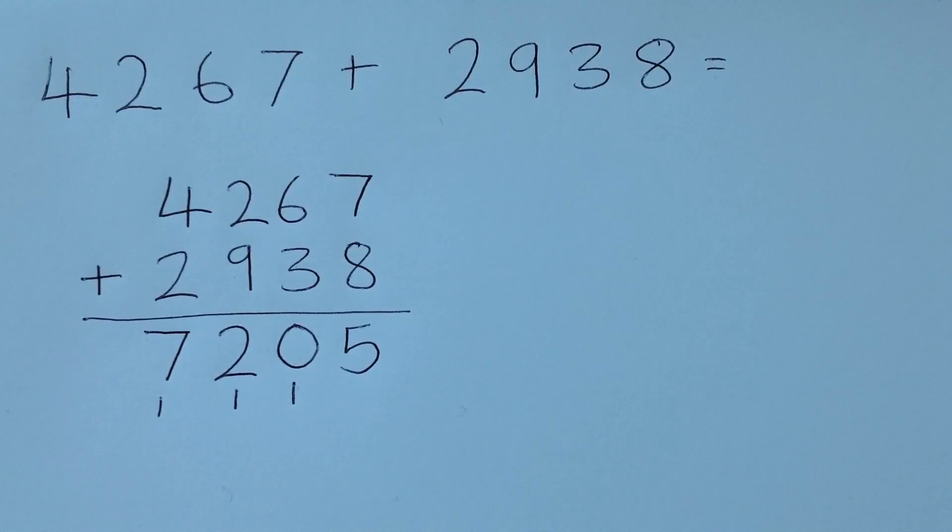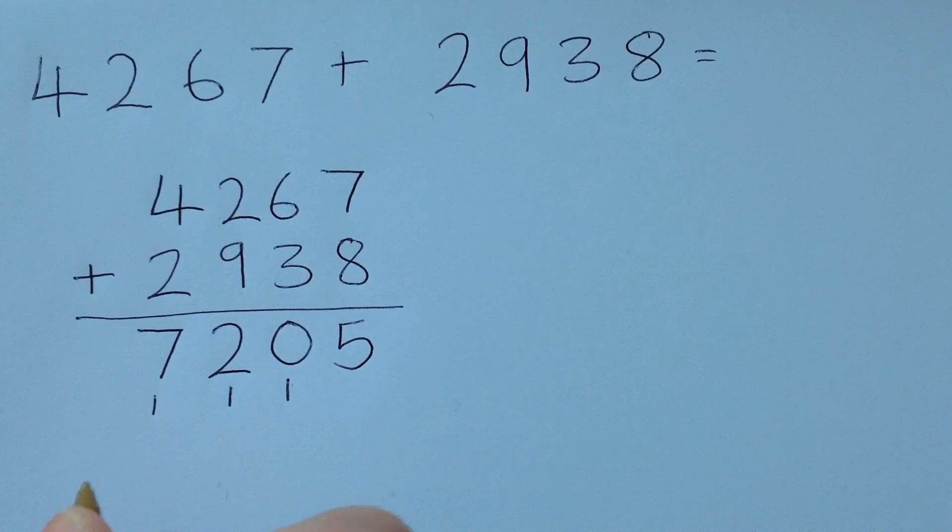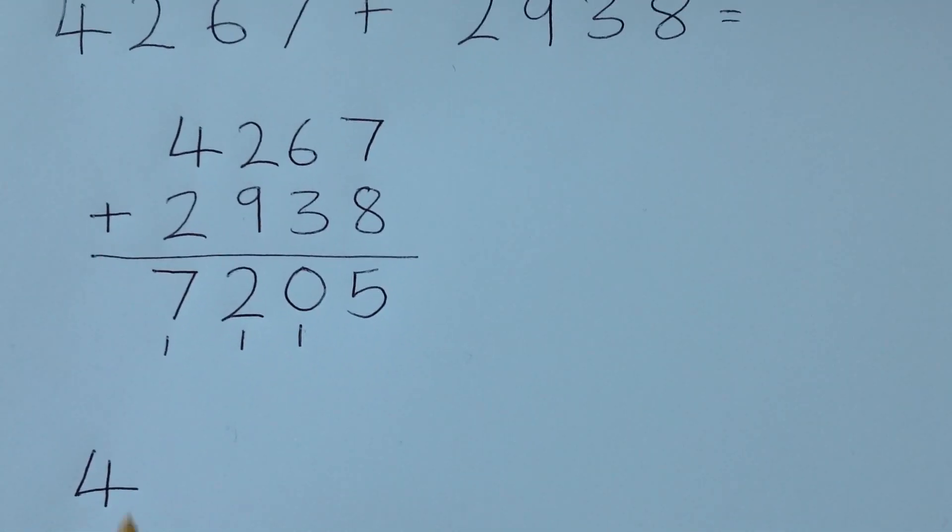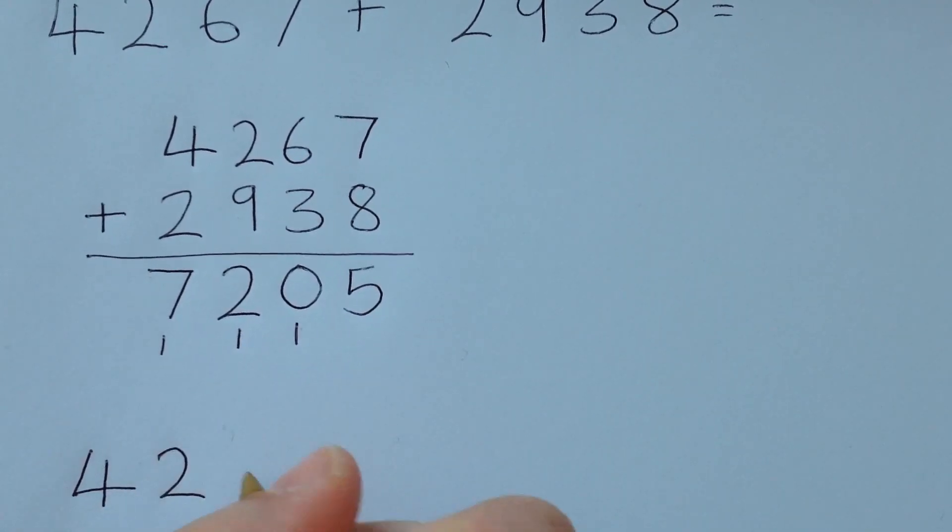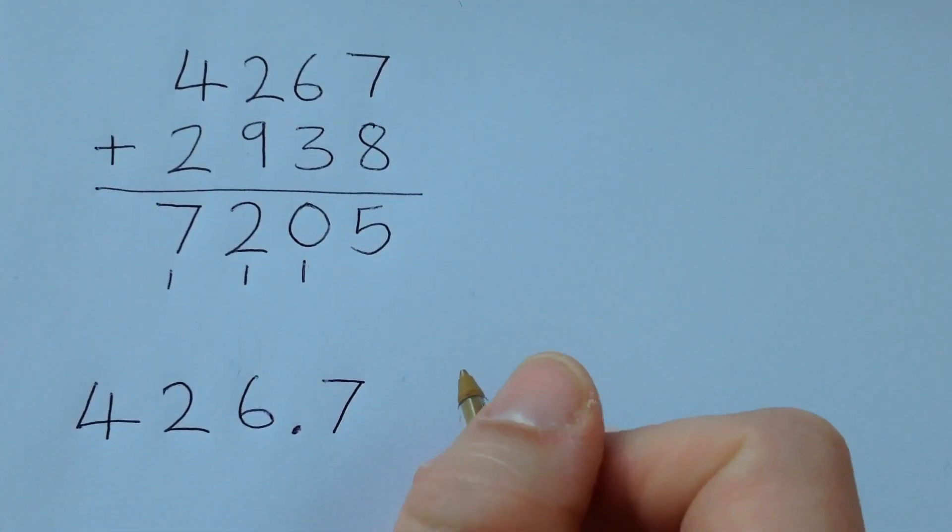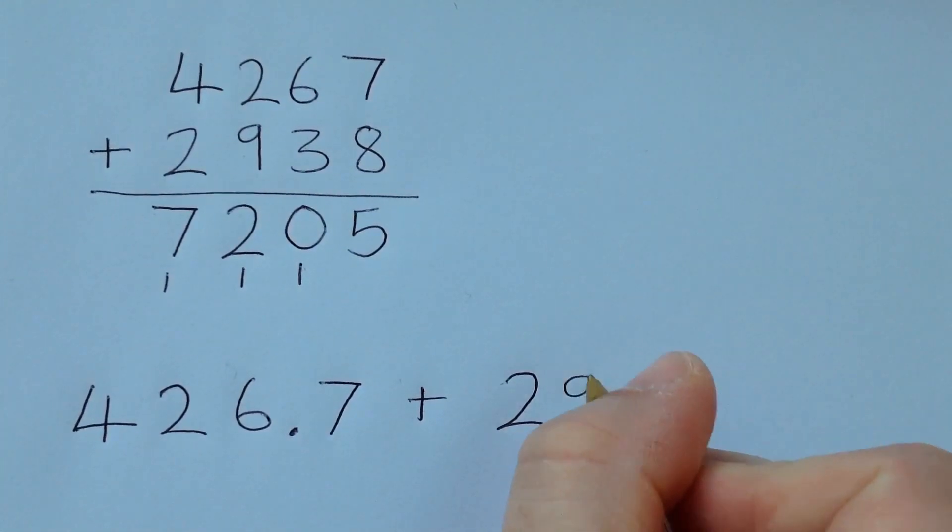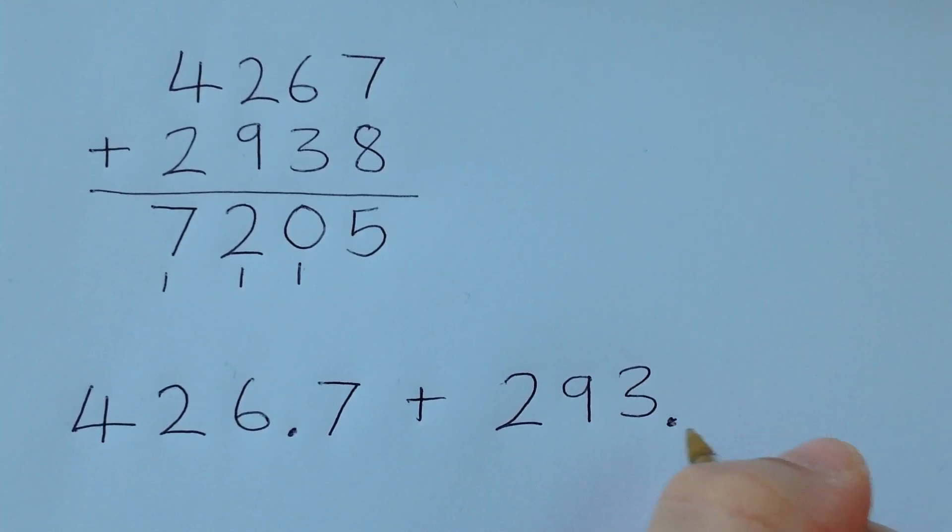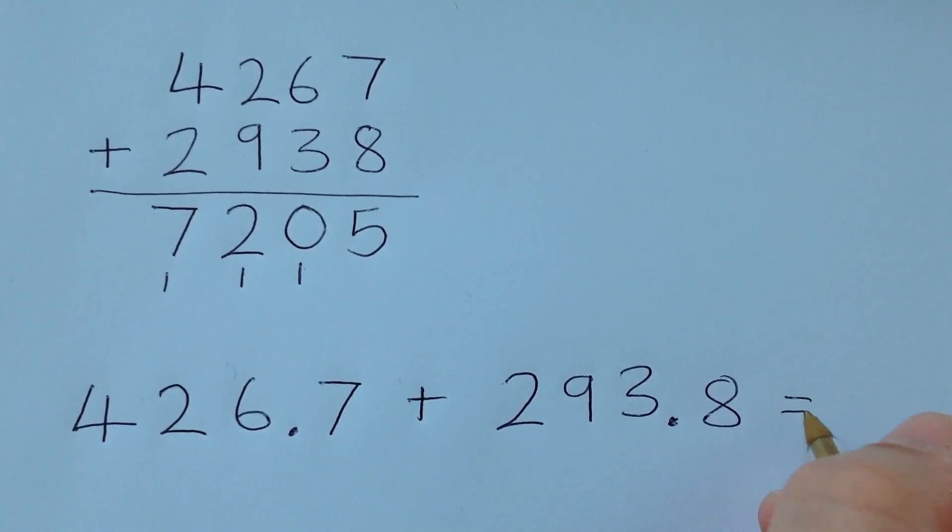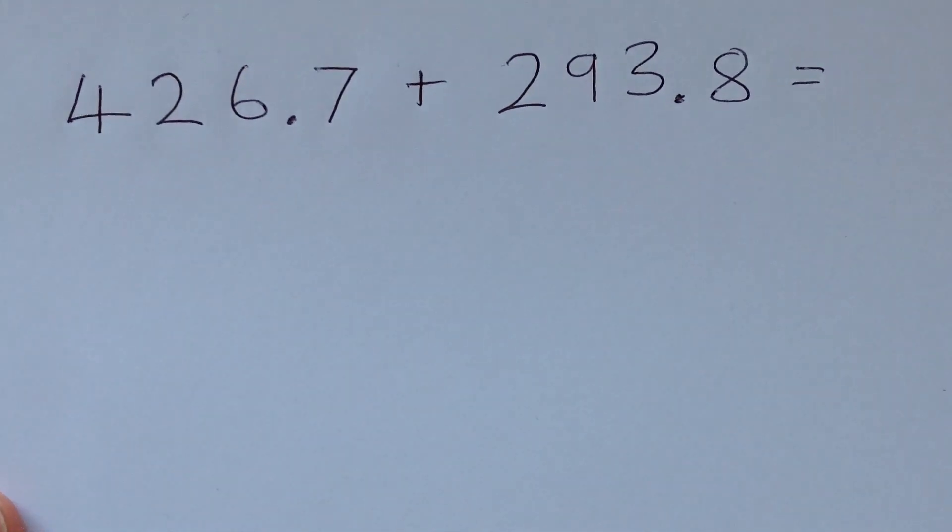Now, what if I change the problem slightly? What if it wasn't 4,267? What if the number was 426.7? So it's got decimals. Well, I think you could probably realize that actually this is going to be pretty similar so far.